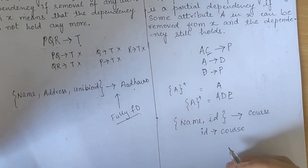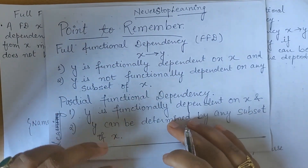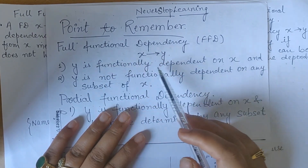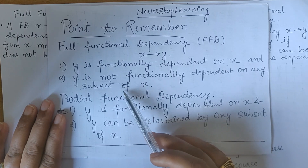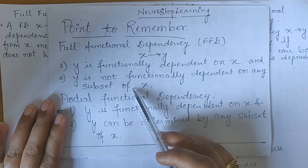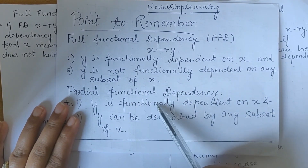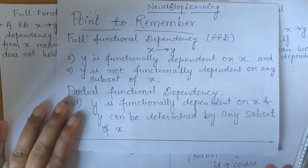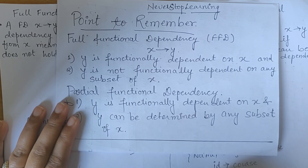For a quick revision: for full functional dependency, if X determines Y, then Y should be functionally dependent on X and Y should NOT be functionally dependent on any subset of X. For partial functional dependency, Y is functionally dependent on X, AND Y can also be determined by some subset of X. I hope full functional dependency and partial functional dependency concepts are clear to you. Thank you very much.